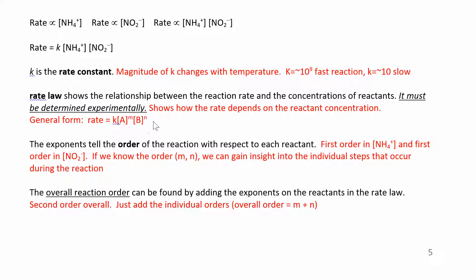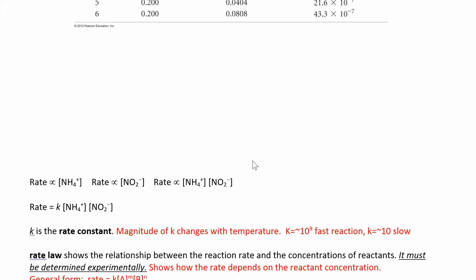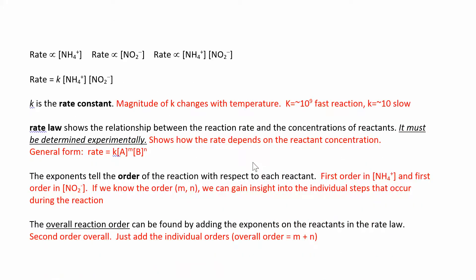Those orders of the reaction tell you how concentration affects the rate. If it's first order, then doubling the concentration doubles the rate. If it's second order, doubling the concentration quadruples the rate. We'll look at how changing concentration affects the rate, determine the orders, then solve for the rate constant K. You can also find the overall order by adding M and N.